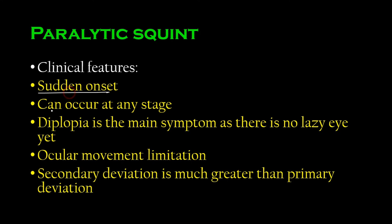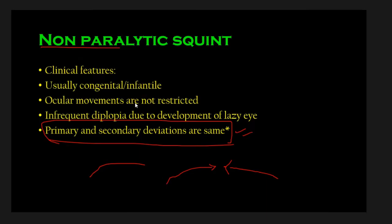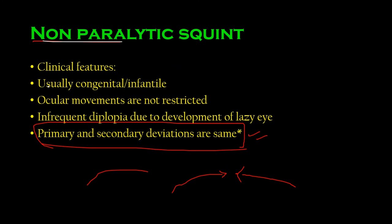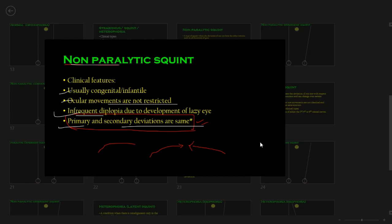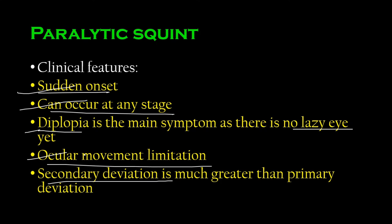To summarize: paralytic squint — sudden onset, can occur at any age, diplopia is the main symptom, ocular movement is limited, and secondary deviation is much greater than primary deviation. Non-paralytic squint — usually congenital, ocular movements not restricted, infrequent diplopia, and primary and secondary deviations are the same. These are the two kinds of squints, the two kinds of strabismus or heterotropias.